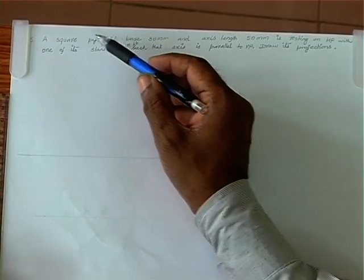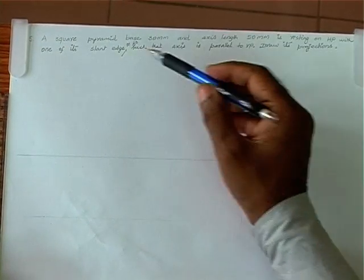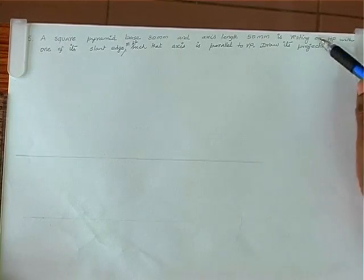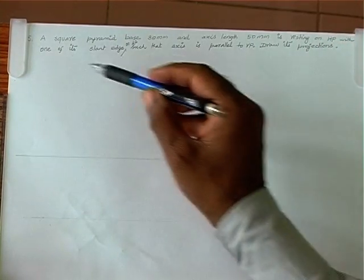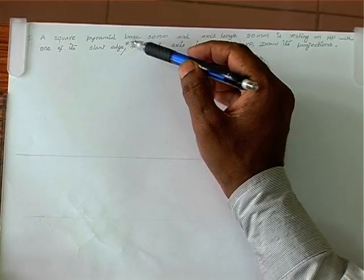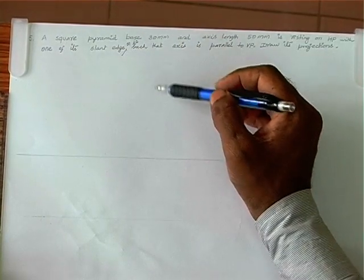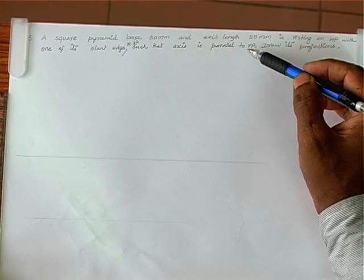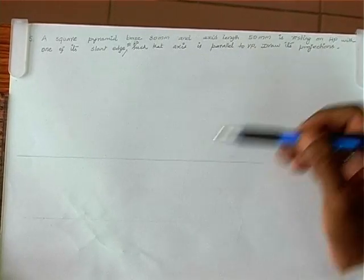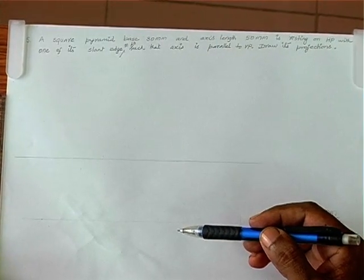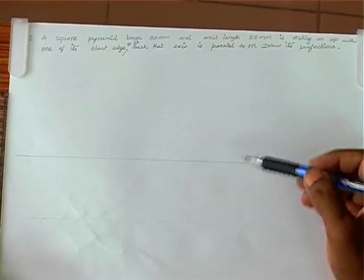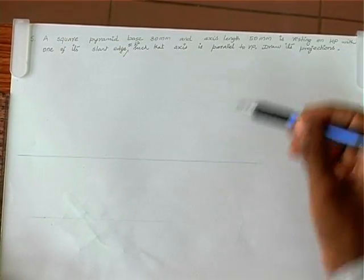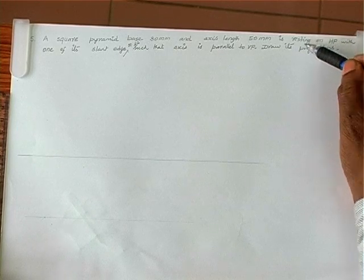Problem number five: a square pyramid with base 30mm and axis length 50mm is resting on HP with one of its slant edges on HP such that the axis is parallel to VP. Draw its projection. Let's draw the XY line as a reference line. The solid is resting on HP, so we draw the top view first.